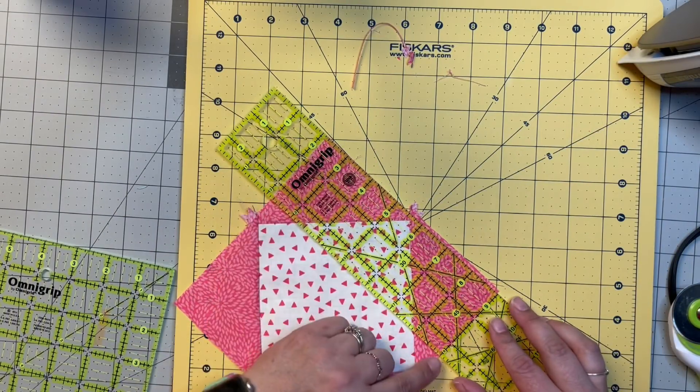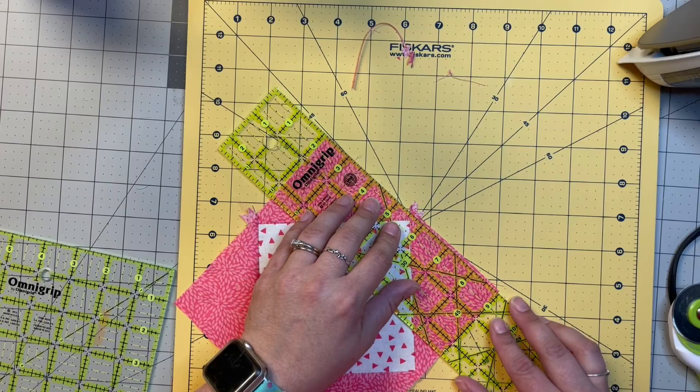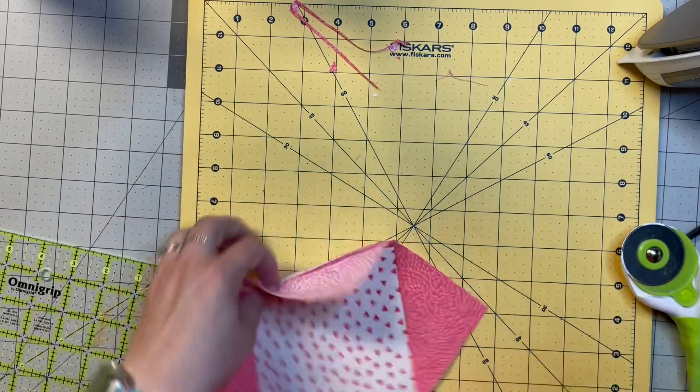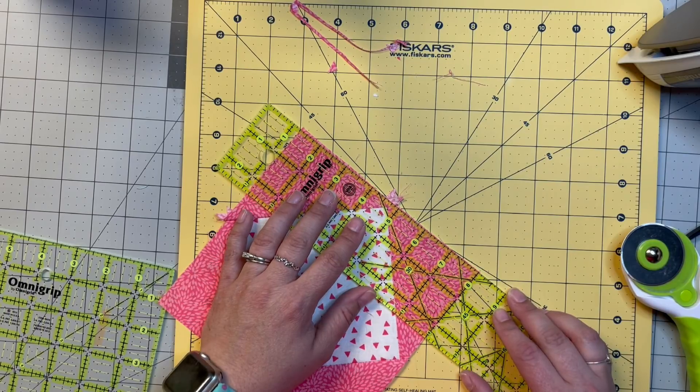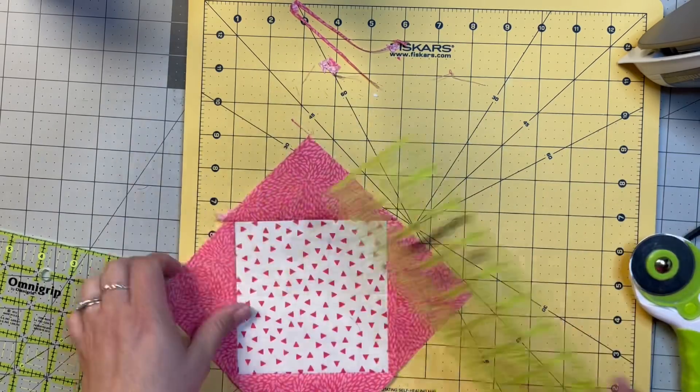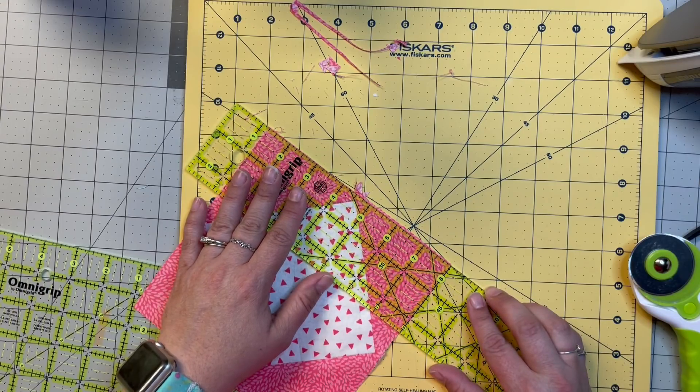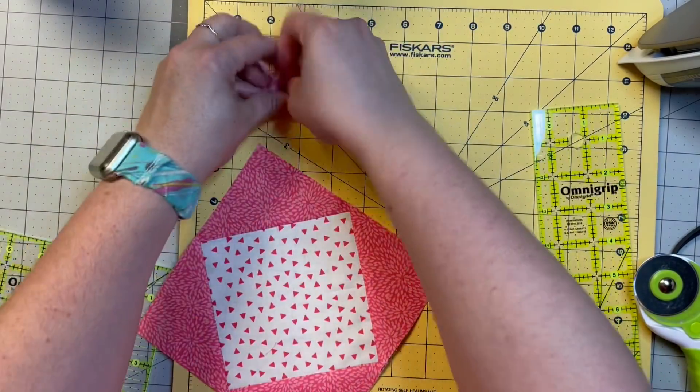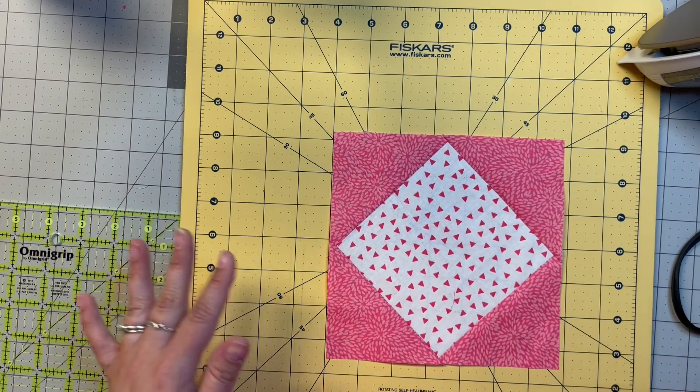I already cut it, so I know it's straight. So again, we're going to do the dot and the straight edge. Shouldn't have too much to cut off. There you go. I'm going to move this to my pile.